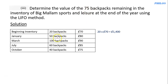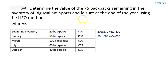The next batch is January with 50 units. The remaining 55 is more than 50, so we can take all 50: 50 times 80 gives 4,000. Now 20 plus 50 is 70, so we're left with 5 remaining. The remaining 5 should come from March.